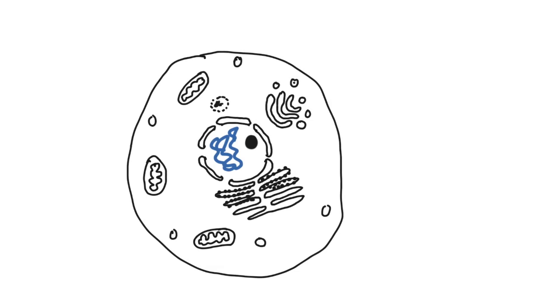We begin by labeling the outermost part of the cell, that is the cell membrane. The cell membrane is a protective membrane that is semi-permeable in nature.